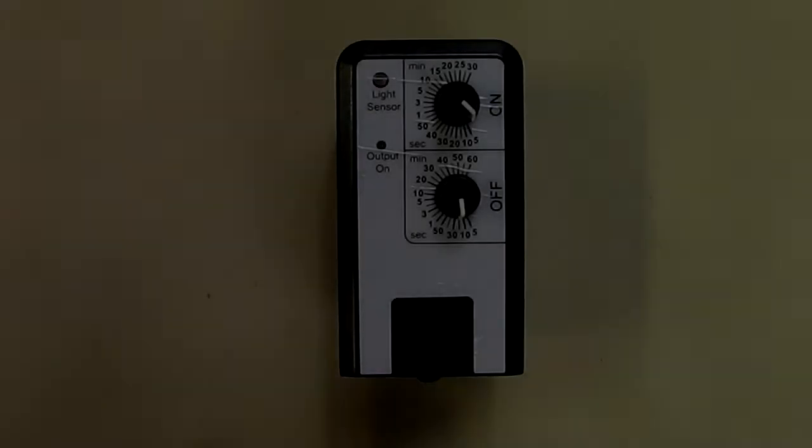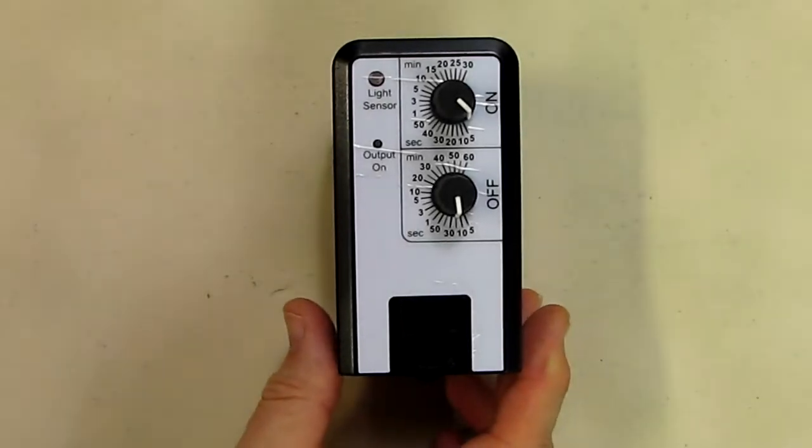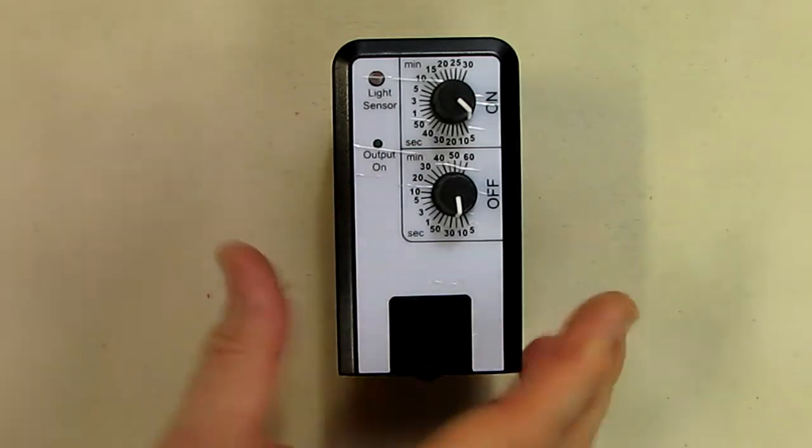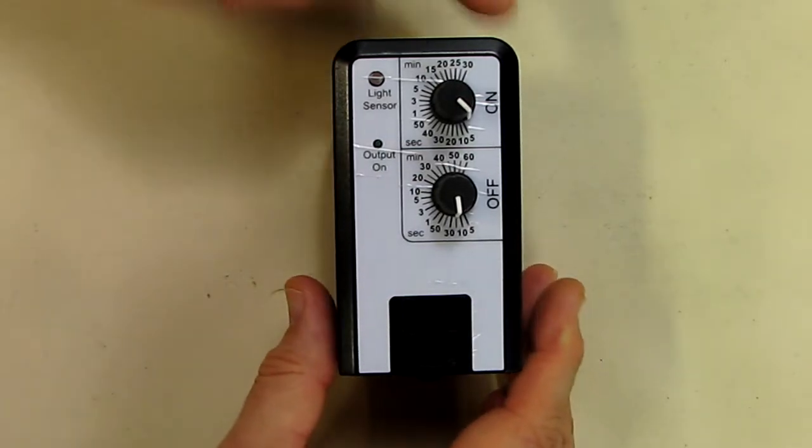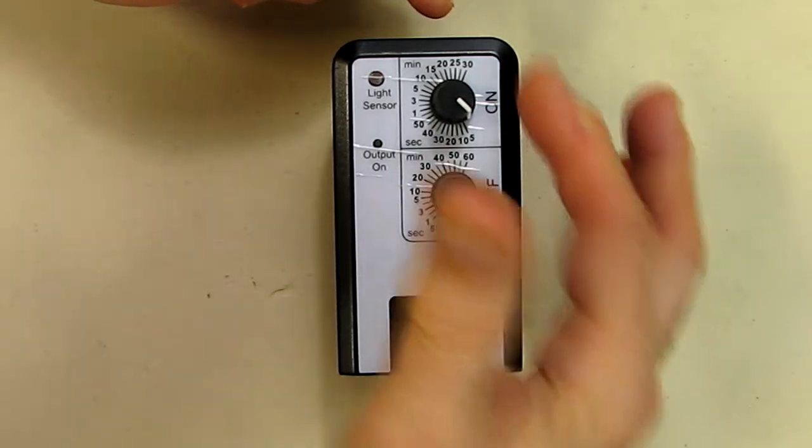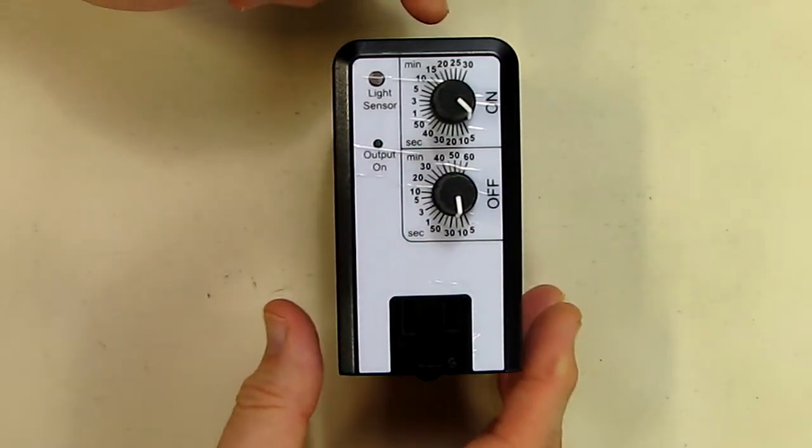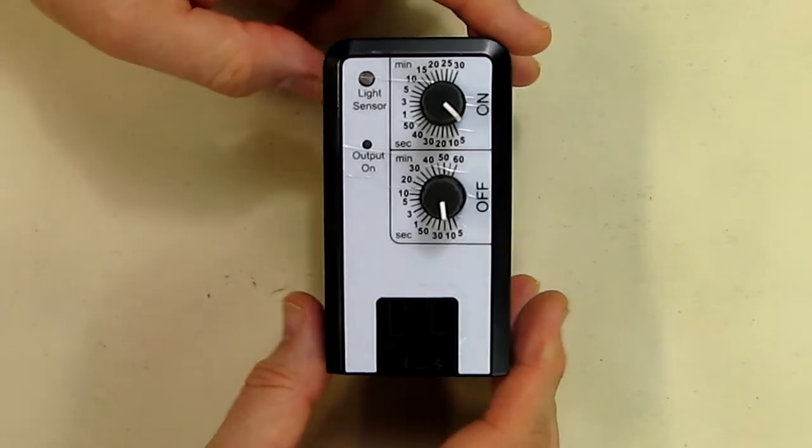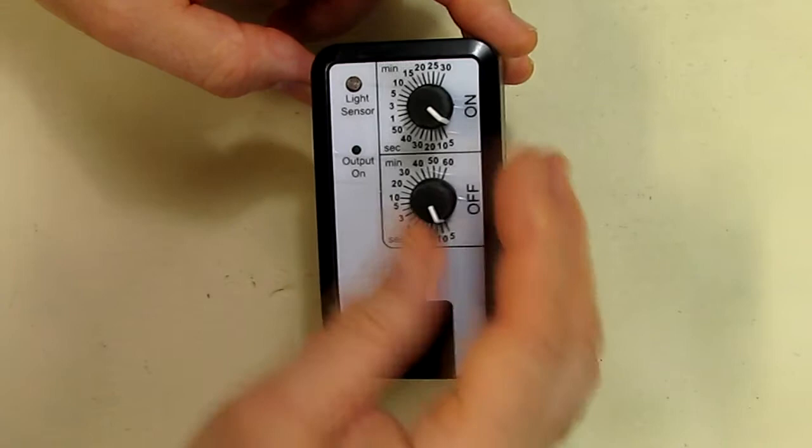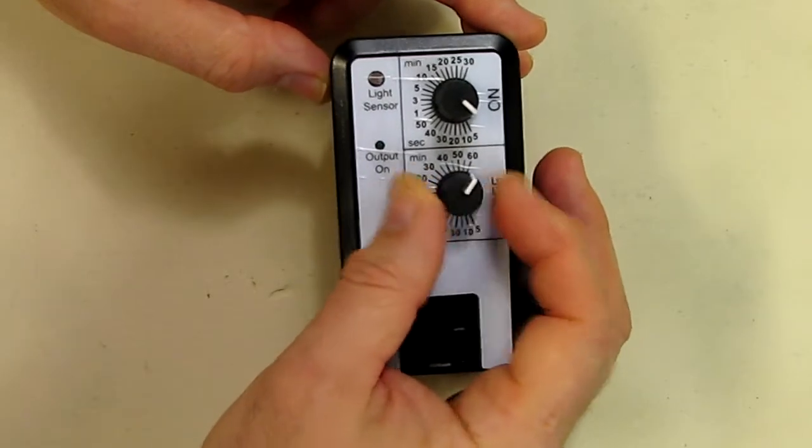So this is what the device looks like and it's got two controls on there. You have the top one which goes from seconds to minutes, five seconds to 30 minutes, that's the on time. And the bottom one is the off time, goes from five seconds to 60 minutes. You have a nice dial you can rotate with a white line to get an approximate time.